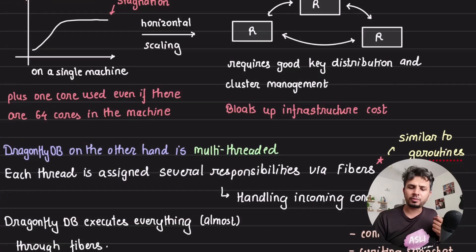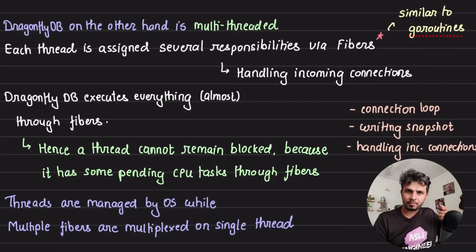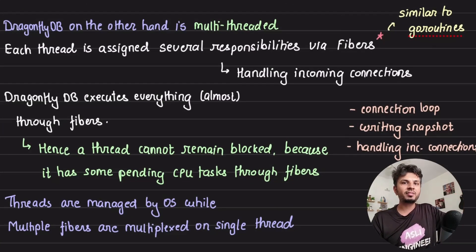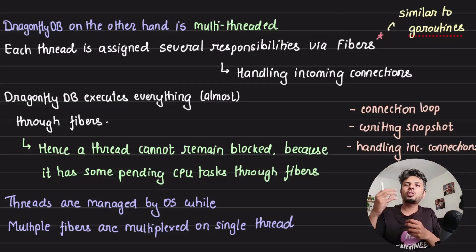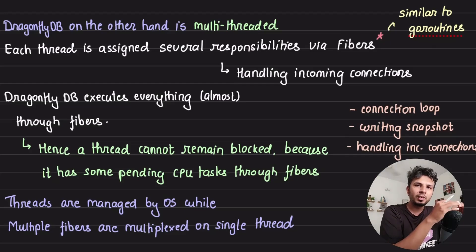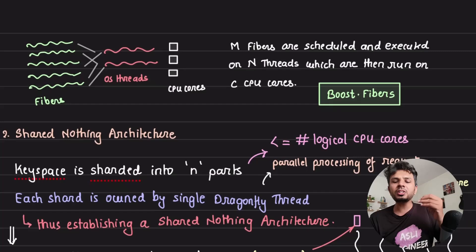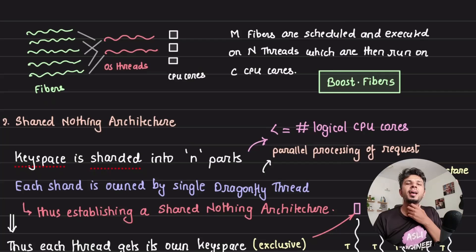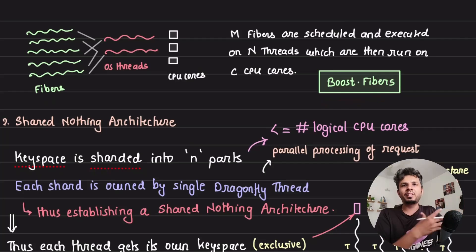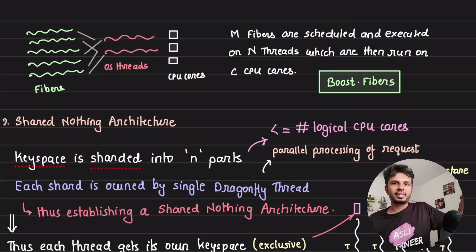The key advantage of this is that you can have a large number of fibers, so your unit of concurrency is very granular and you can move faster. Second, because there are a large number of fibers executing in parallel, your OS threads cannot remain blocked for long — there is always some fiber ready with some execution. DragonFly DB is written in C++ and is open source. They use a library called boost.fibers to handle fibers and manage user-level concurrency.